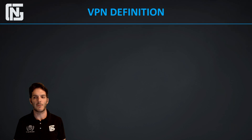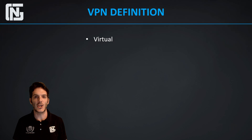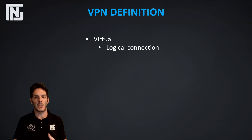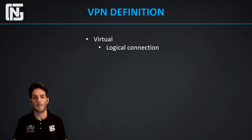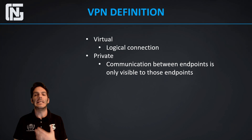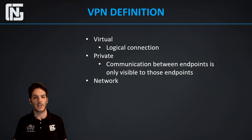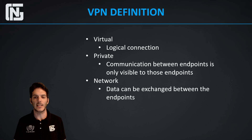When it comes to a VPN definition: first of all, it's virtual — it's a logical instantiation of something. It's a logical connection, meaning it's happening in software, connecting and doing things behind the scenes. It's private, meaning the communication between endpoints is only visible to those endpoints. And the network aspect means data can be exchanged between those endpoints.